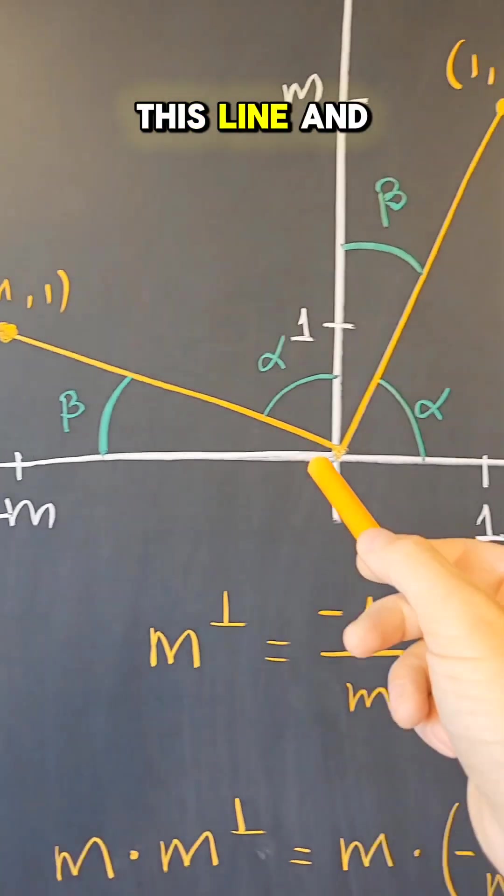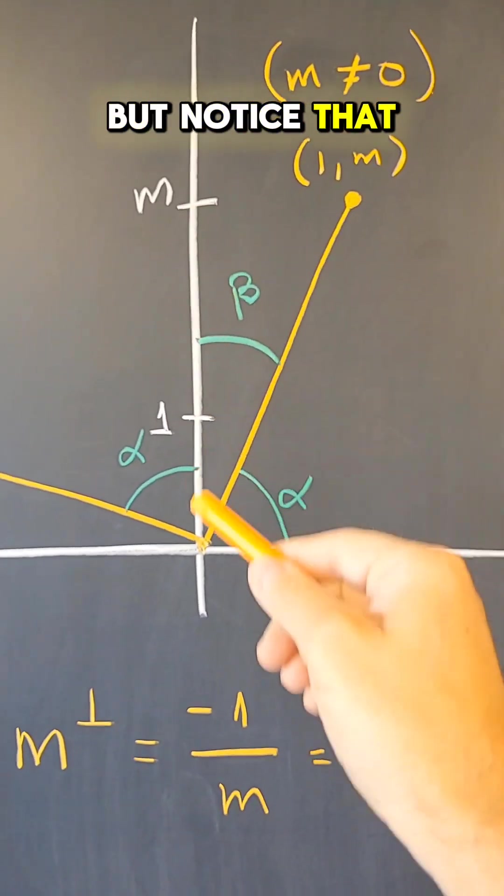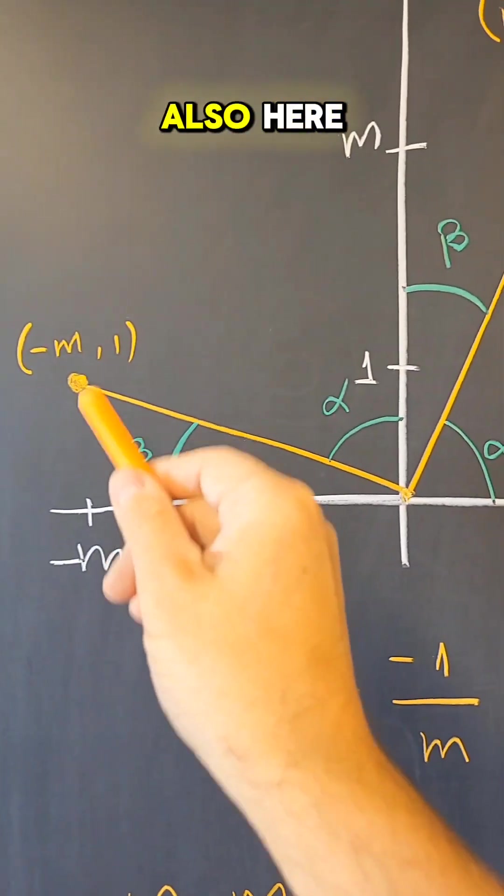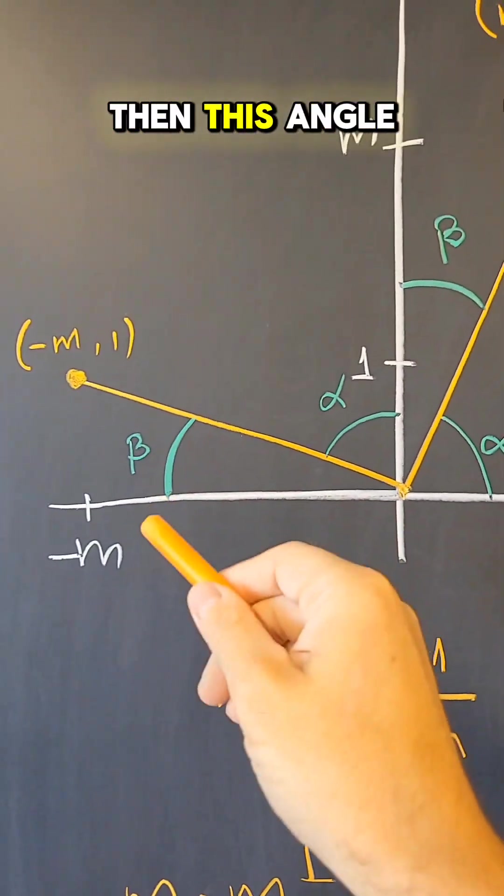So it remains to show that this line and that line are perpendicular. But notice that this triangle is also here. So if this angle is beta, then this angle is beta.